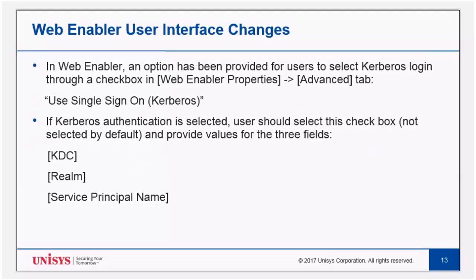To have single sign-on, the user needs to select the 'Use Single Sign-On' checkbox. By default, this option is not selected. Along with this option, the user needs to provide values for KDC, Realm, and service principal name fields. KDC, or Kerberos domain controller, holds all the secret keys for all the principals in a Realm. Realm is a grouping of principals that represents a domain. A service principal name is an entity that can prove its own identity and verify the identity of other principals.